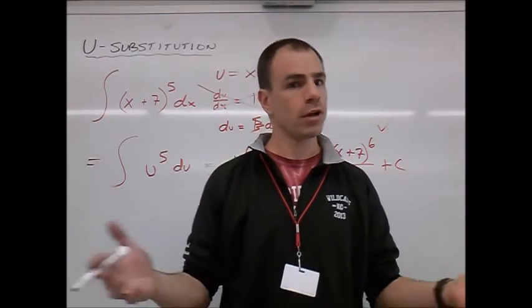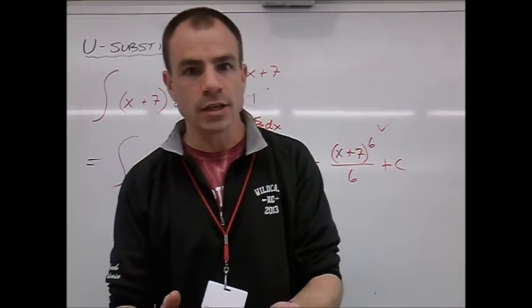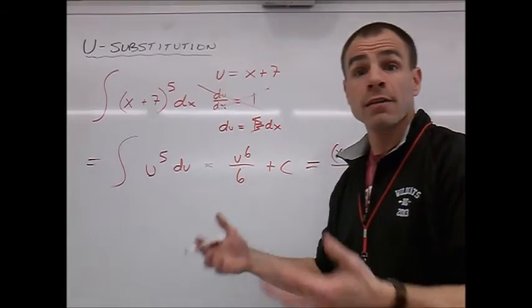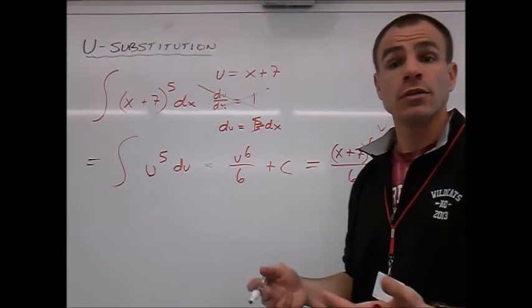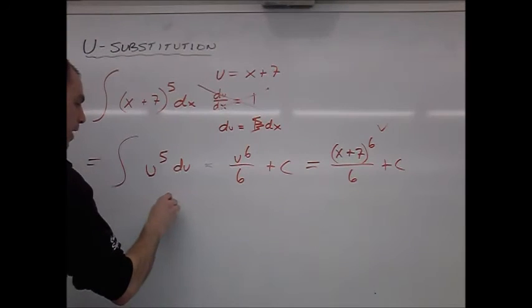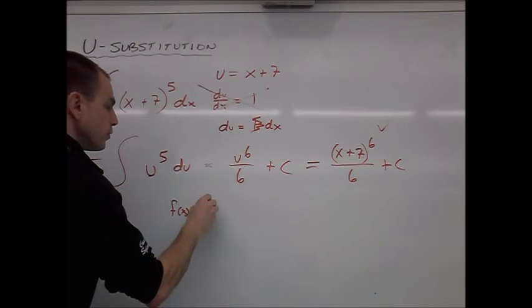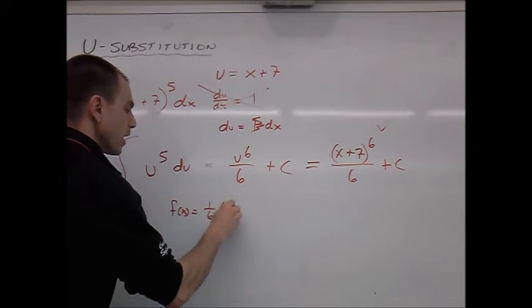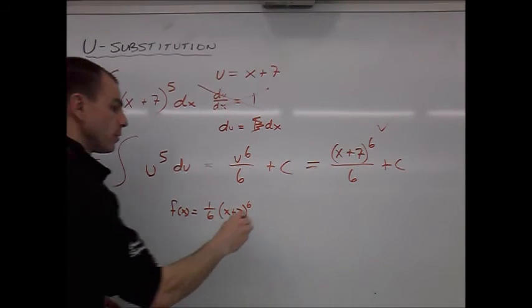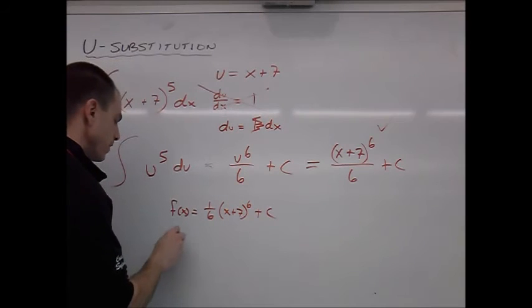How do we know? We can always check. Remember, whenever you take an antiderivative, you can always check your answer by finding the derivative of your answer. Let's do that. So let's just say we have f of x is equal to 1 6th times x plus 7 to the 6th power plus c, and we want to find the derivative.